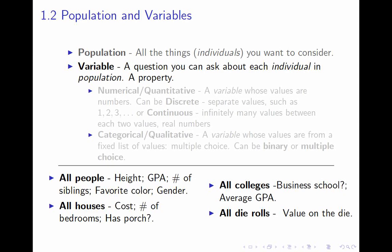Variables come in two distinct flavors, and this is a distinction I will ask you to be able to make: whether a variable is numerical or categorical. Later in the course when there's a lot more going on, you will benefit greatly from having this distinction automatic. A numerical variable is a question you ask of each individual whose answer is a number.